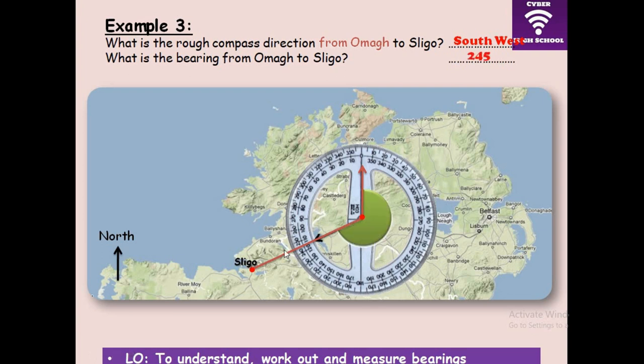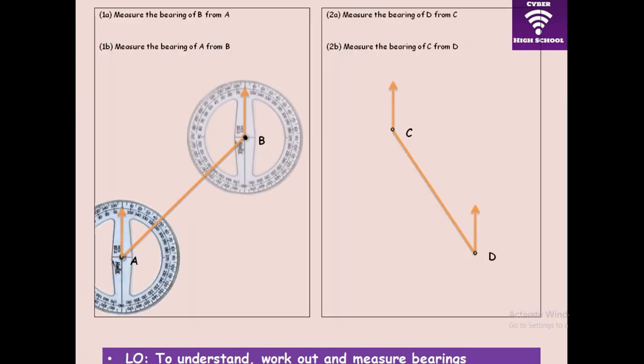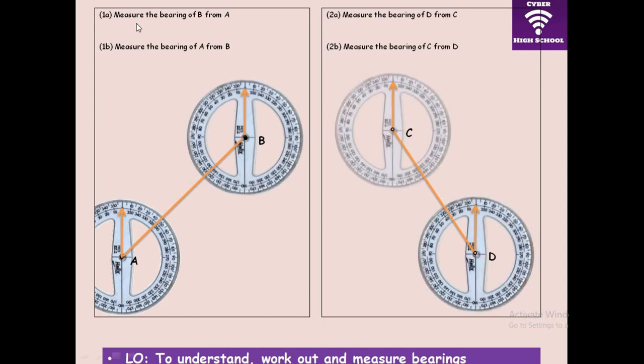Measuring clockwise from north gives you 245 degrees.